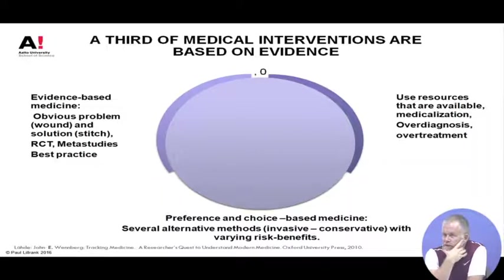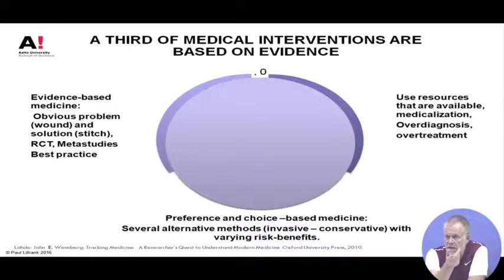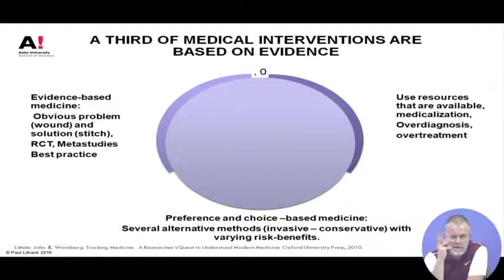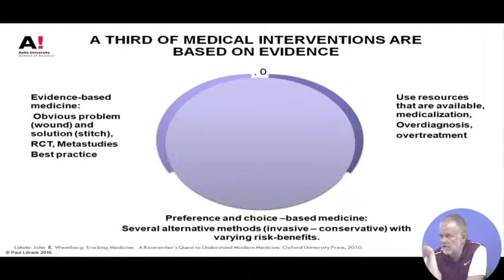Preference and choice-based medicine means situations where a patient has a medical problem and something needs to be done, but medical science cannot exactly say that this and only this is the thing that needs to be done. Medical science may say there are two or three options and nobody can know which of them is better. So how do you decide? Most typically the patient can choose.